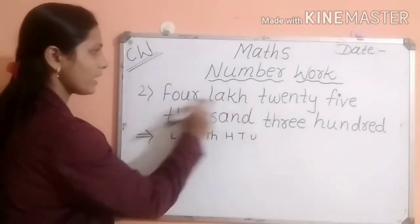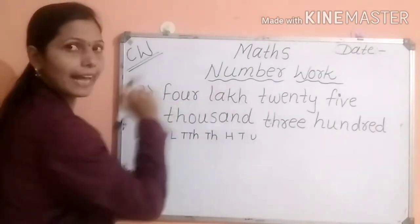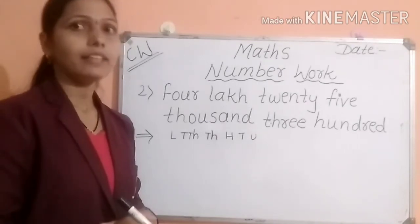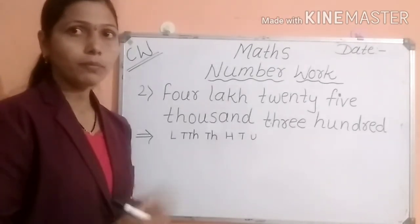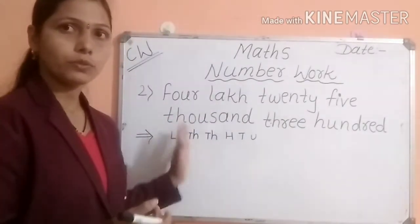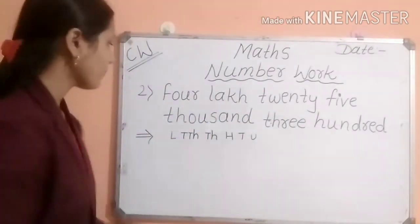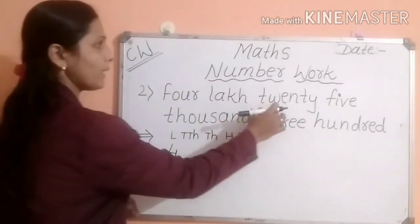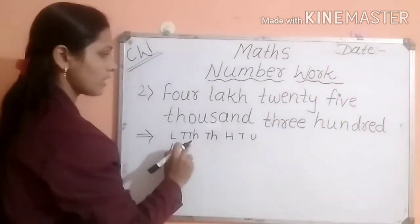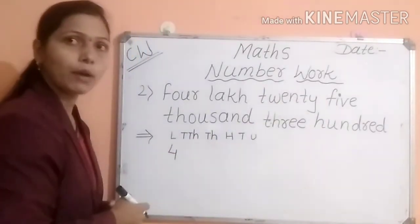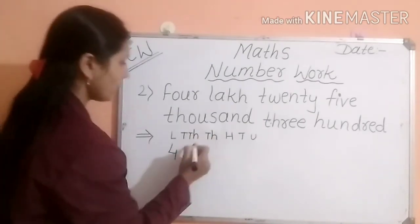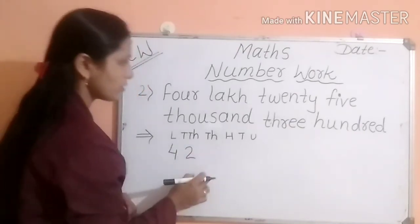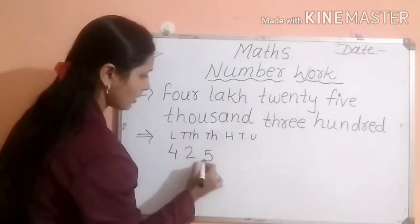Now, how many are lakh? Four lakh. See students, while writing the number in figure, we should start that number from left to right, from first to end. Now here, at lakh place, four is there. The 25 means thousand and ten-thousand place — we have to read them together. So twenty means two at ten-thousand and five at thousand — twenty-five thousand.